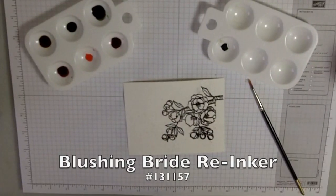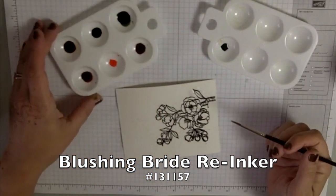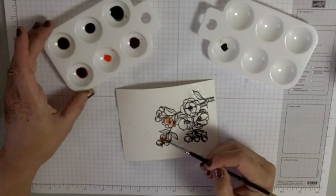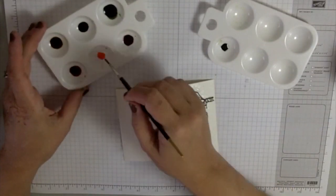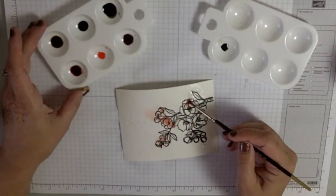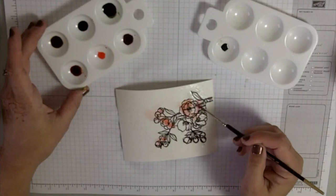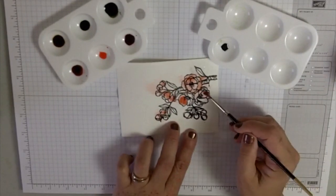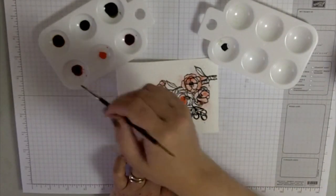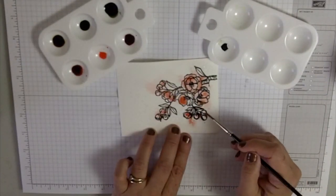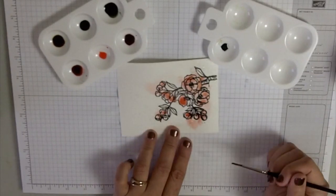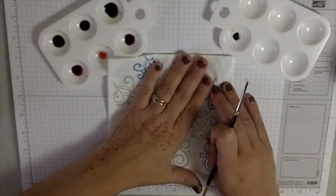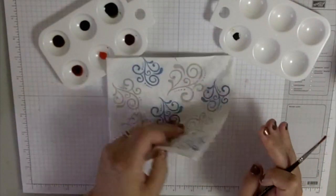I'm going to start with Blushing Bride. I'm actually going to fill in the background of most of the flowers with Blushing Bride—that's going to be my lightest color. It has some brown tones to it, so that's going to be great. Once I've got that color in, I'm going to blot it right away. I just use a napkin to blot it.